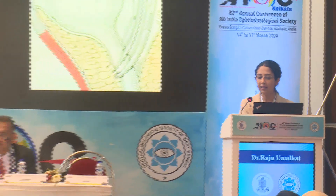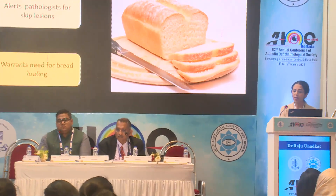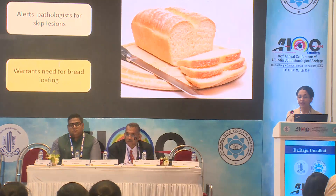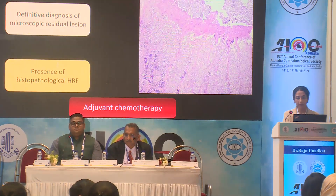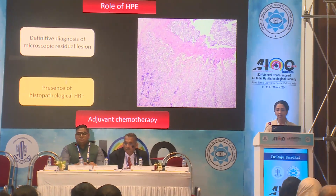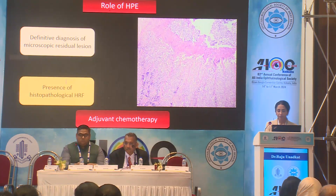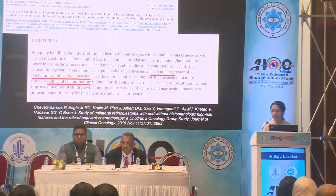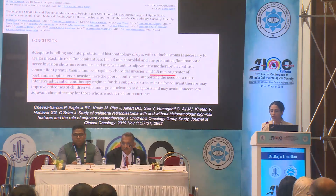The role of MRI is to triage cases of retinoblastoma either towards neoadjuvant chemotherapy or primary enucleation. It also alerts the surgeon for possible surgical safe margins and taking a long optic nerve stump, and alerts the pathologist for possible skip lesions, warranting the need for re-sectioning. The role of histopathology stands for triaging cases with high-risk features towards adjuvant treatment, which, as previously published data has emphasized, can significantly reduce the risk of metastasis.